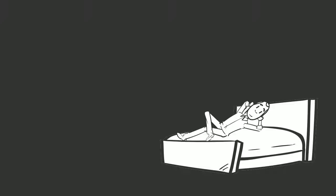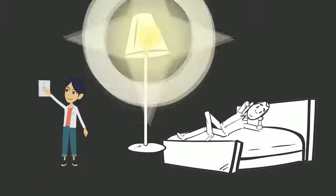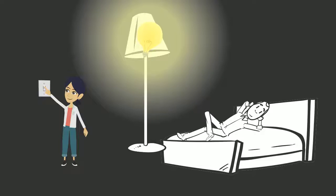Turn a switch on and it completes the circuit, letting electricity flow through it. Turn it off and the circuit is broken — the switch creates a gap that stops the flow. The electrical wall switch is one of the most basic yet important electrical devices in the home.